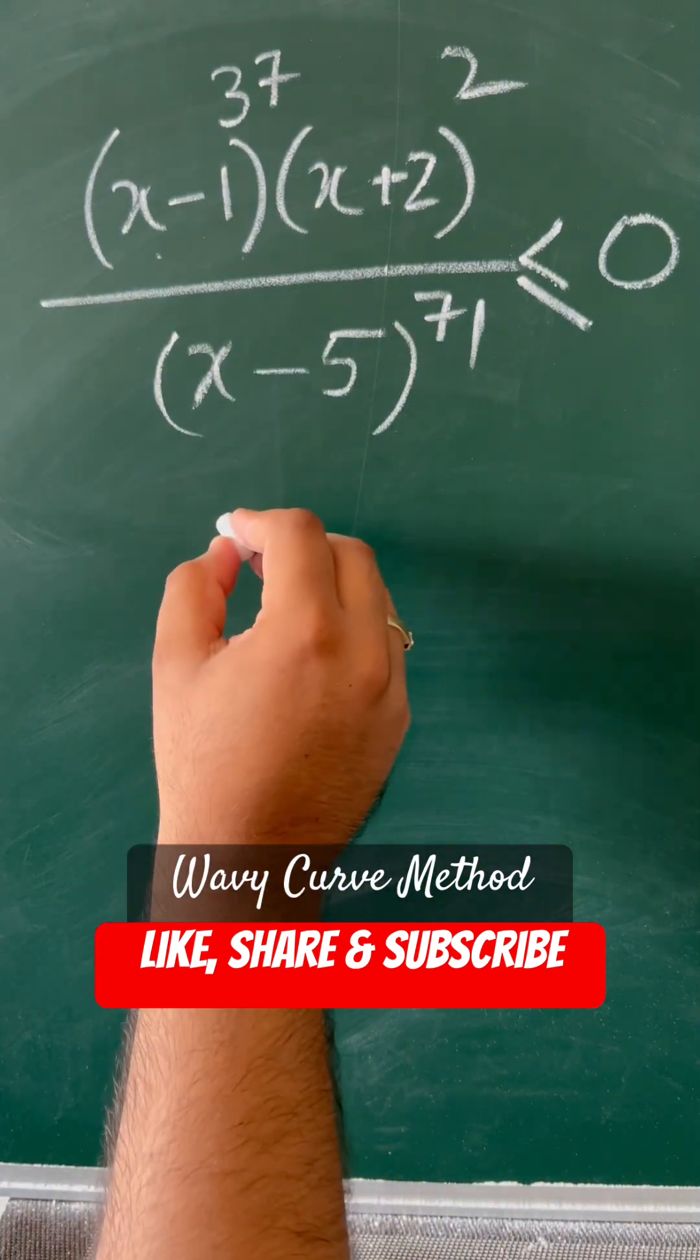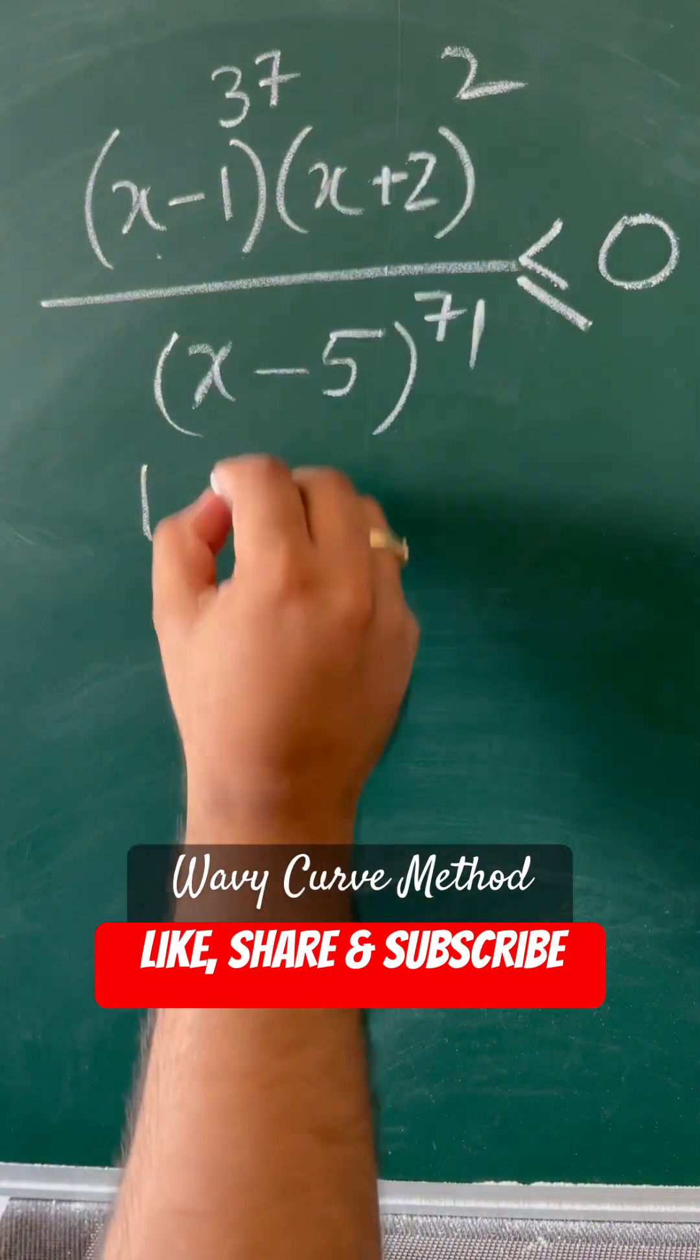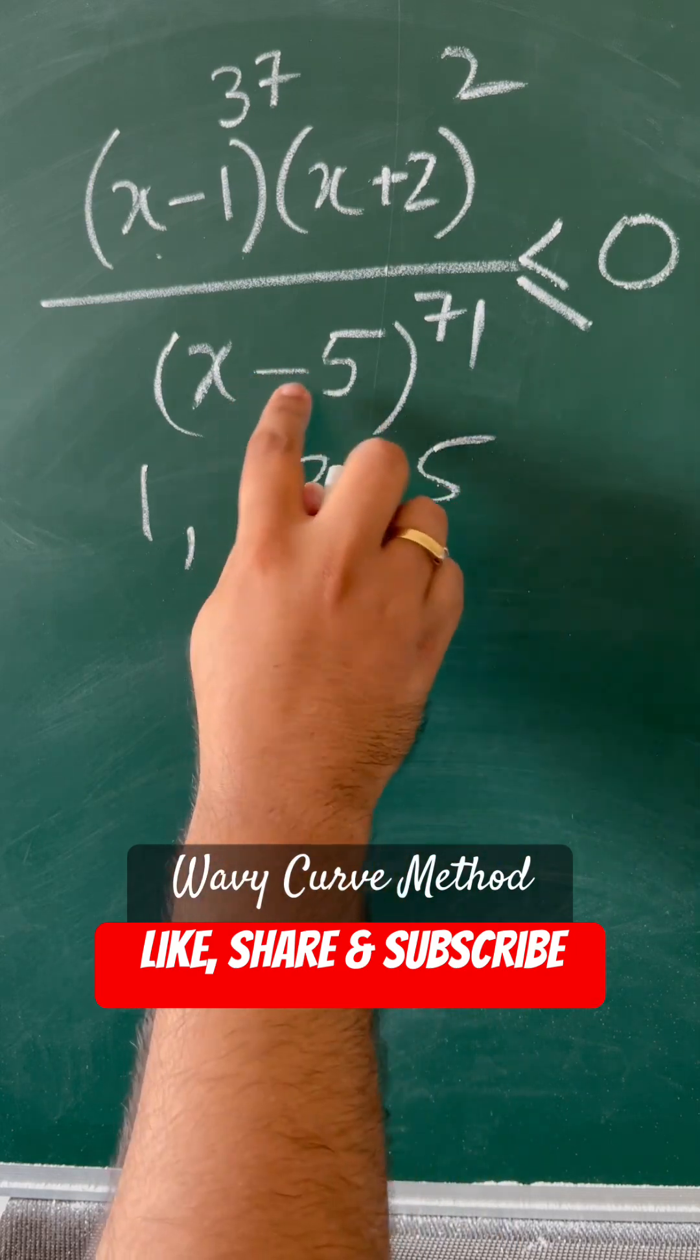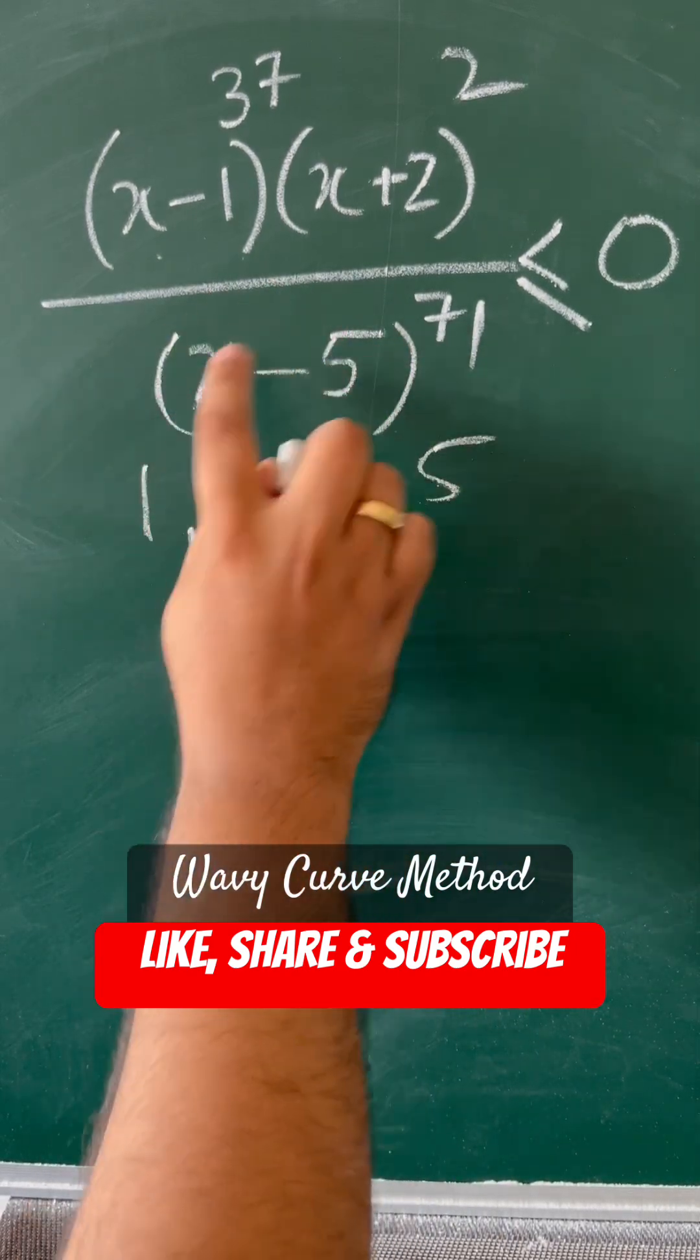This is a wavy curve question. You have to find the critical points, which are 1, -2, and 5. Now x cannot be equal to 5 because it is in the denominator part.